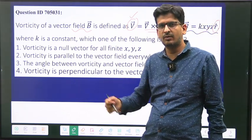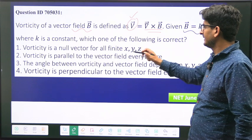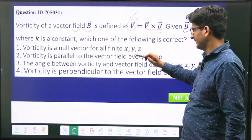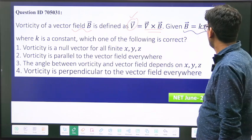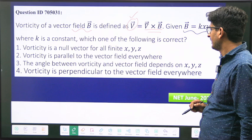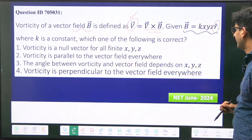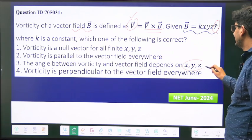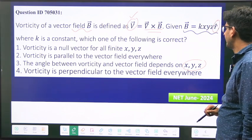Is this V zero, or is it a parallel vector to the field - that means parallel to R cap - or the angle between V and vector field depends on XYZ, or vorticity is perpendicular to the vector field everywhere?